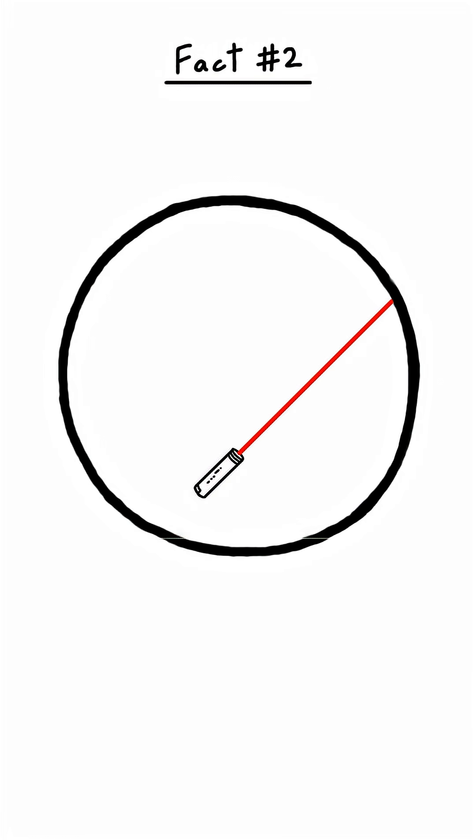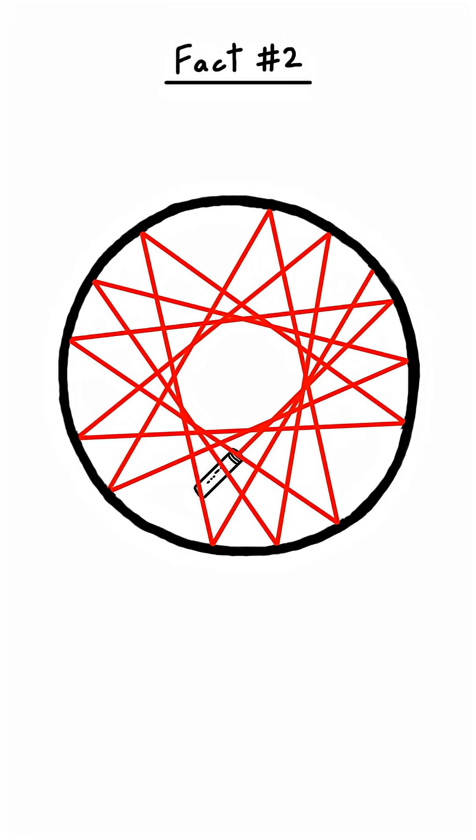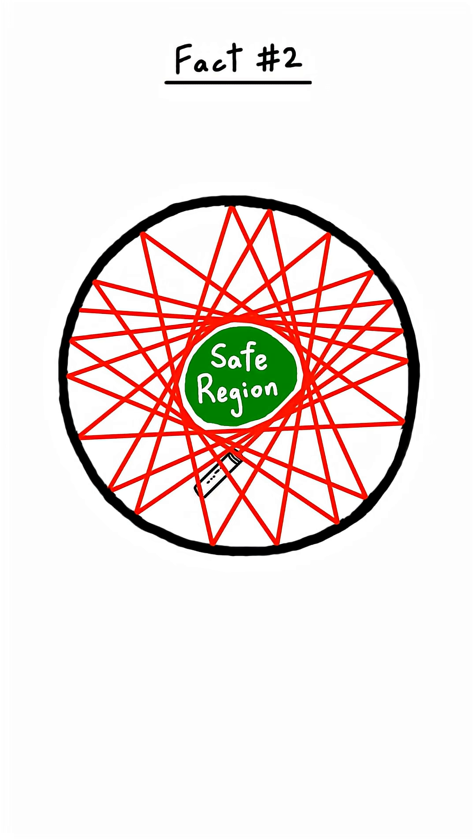Second fact, shine a laser pointer inside a circle whose walls are reflective. No matter where the laser is or what direction it's pointing, there will always be a region it can't get to even if it bounces around forever.